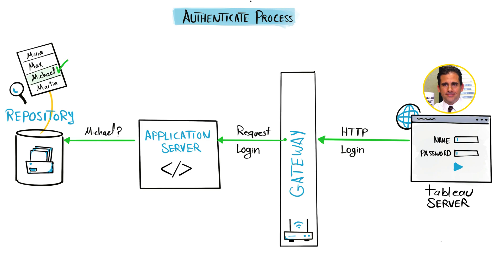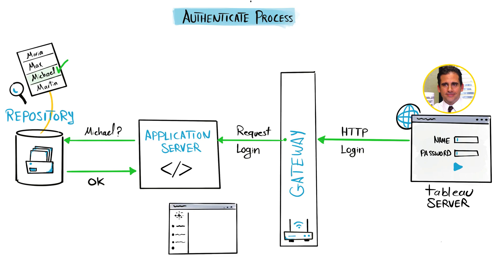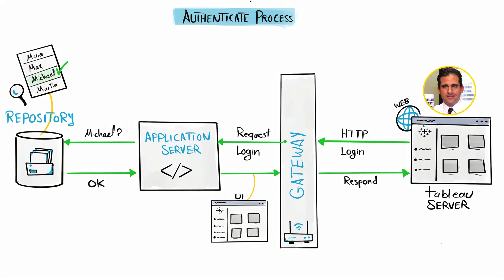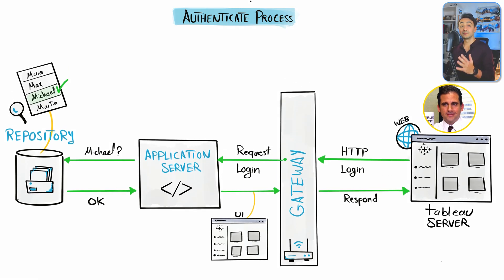The repository checks the credentials, and if everything matches and Michael is allowed to access our server, it responds back to the application server saying the user is in its records. The application server then builds the server UI and sends it back to the gateway, which forwards it to Michael's browser. Now he is inside our Tableau Server.